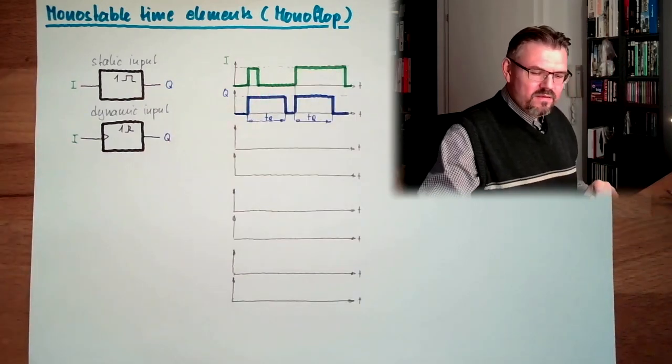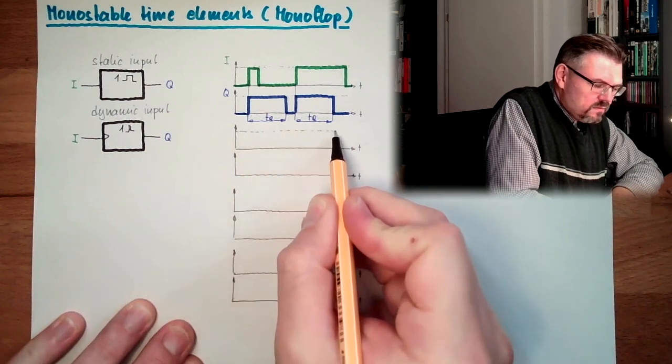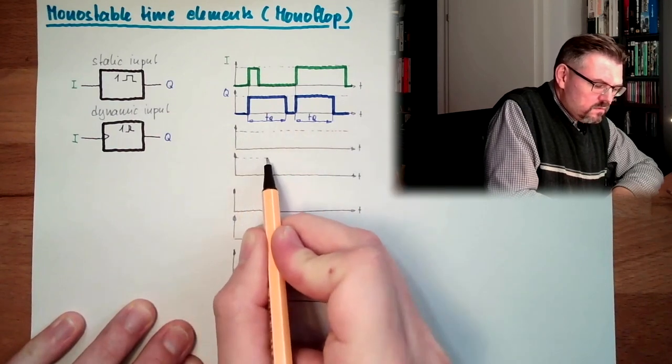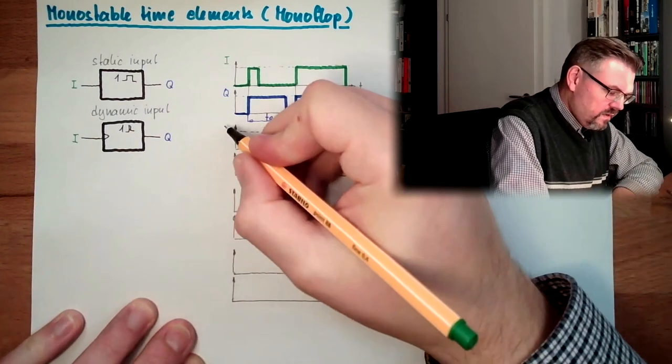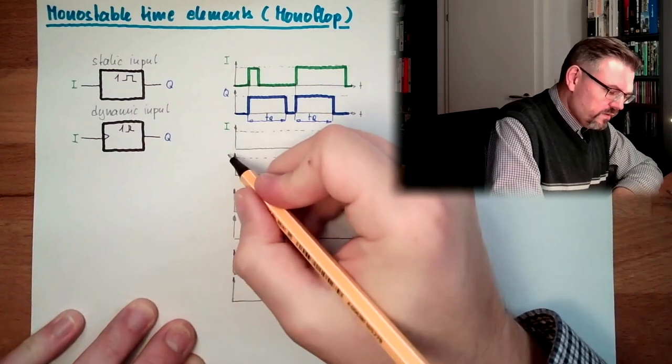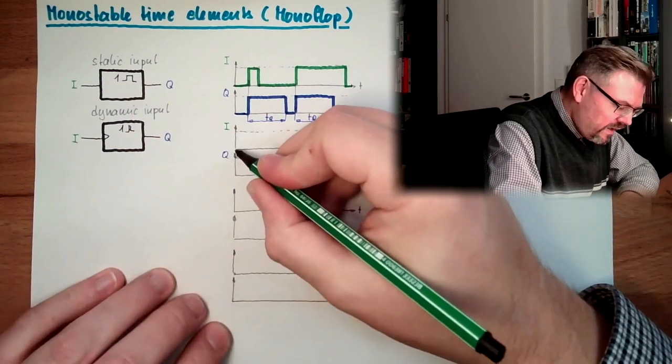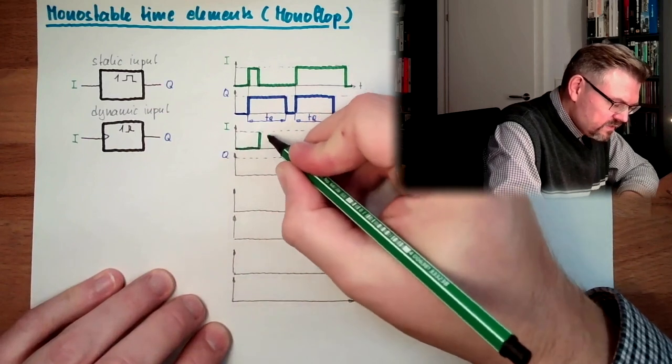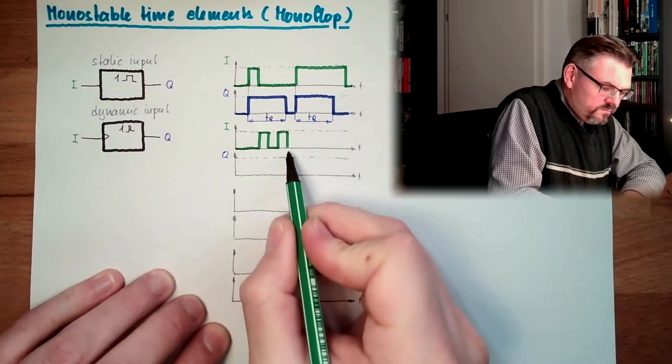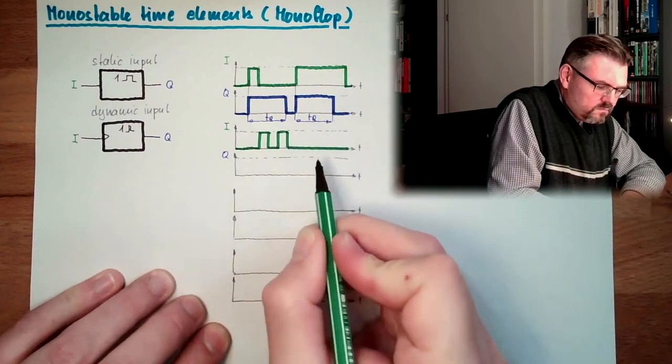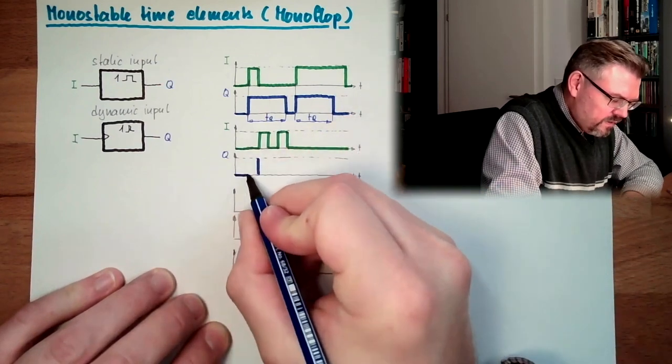And there is a difference. For instance, let's make here i and q again to show you a difference. If we have here i, which is triggered at a certain point in time, and then shortly afterwards again triggered, then there are elements out there which will be triggered here.